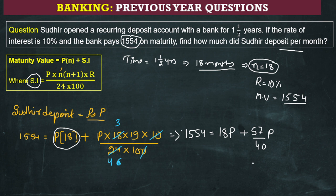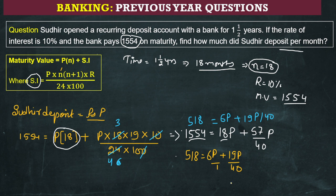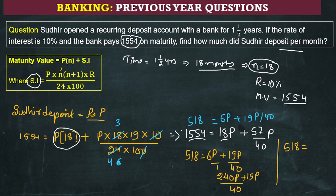Now dividing all terms by 3: 1554 divided by 3 gives 518, 18P divided by 3 gives 6P, and 57P divided by 3 gives 19P, with 40 still in the denominator. Taking LCM as 40: 40 times 6P gives 240P, plus 19P gives 259P. So 518 equals 259P divided by 40.